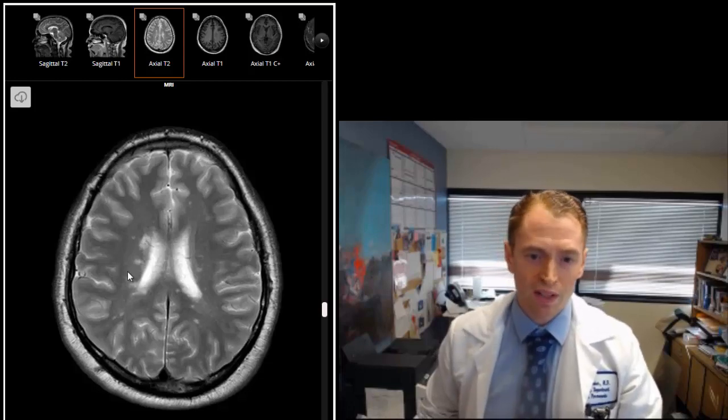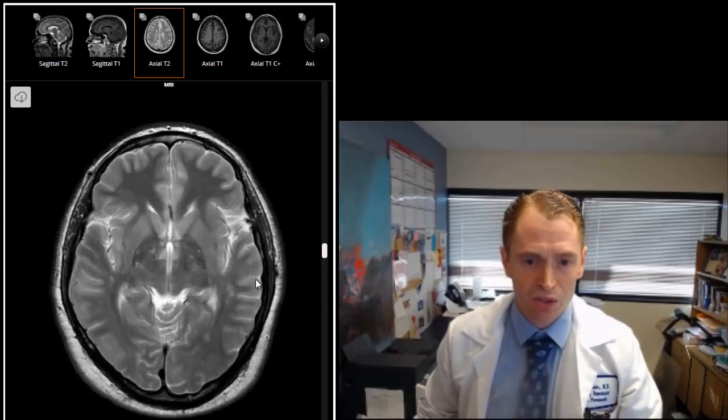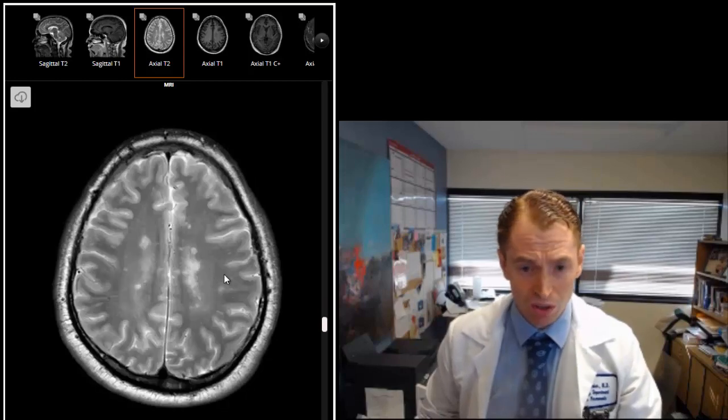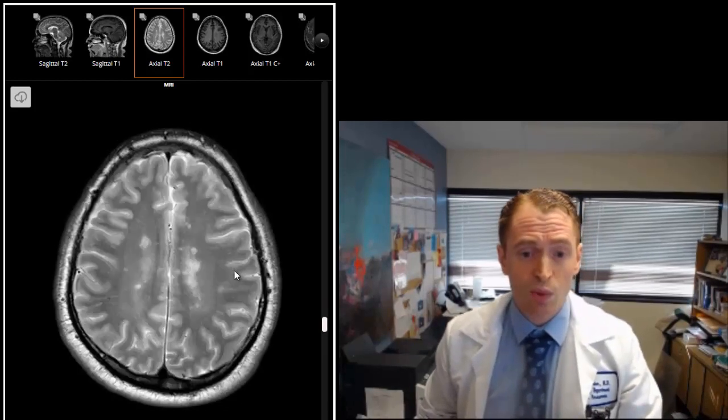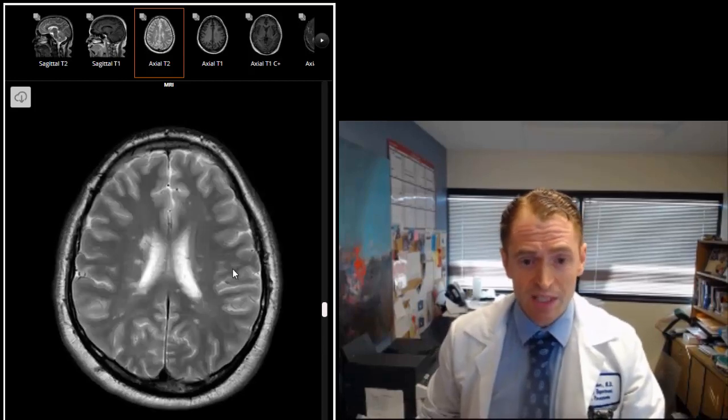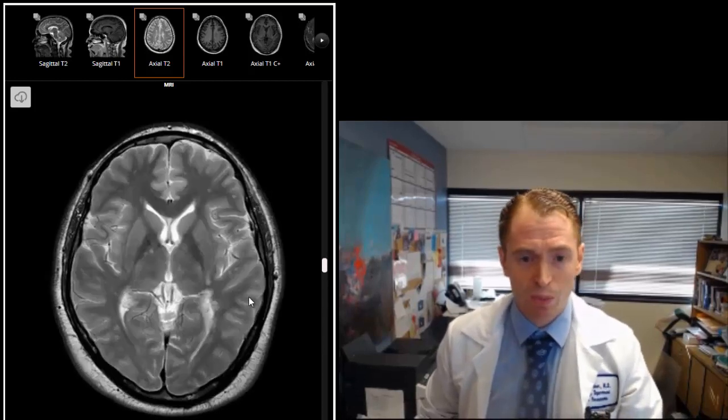This is sort of the picture that you would show to a medical student or a junior resident to show them what MS is supposed to look like. Of course there are a lot of variation from person to person. Not everyone has classic findings but this is like sort of a textbook MRI of someone with MS.